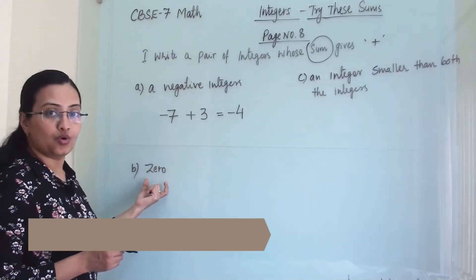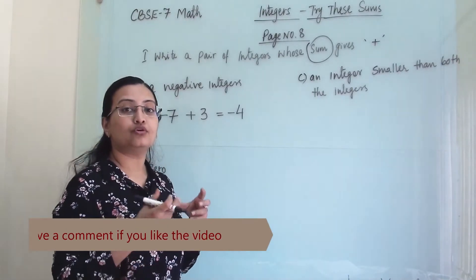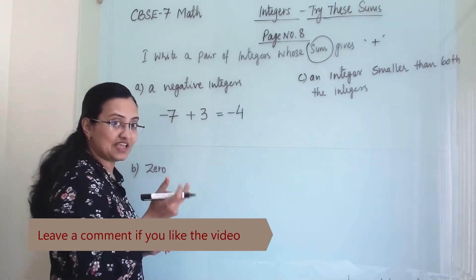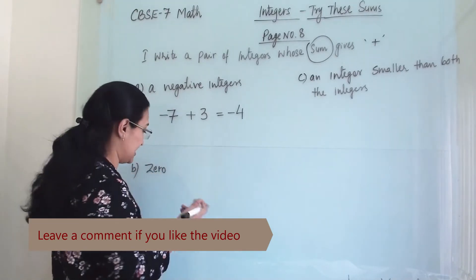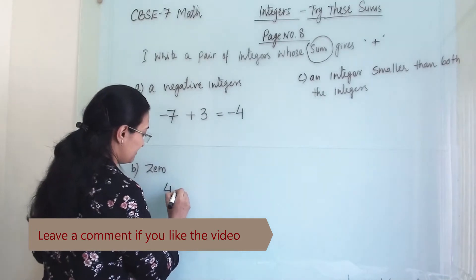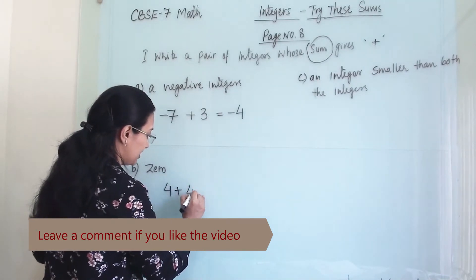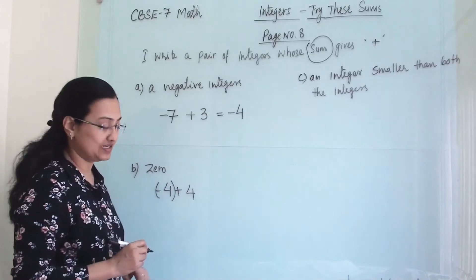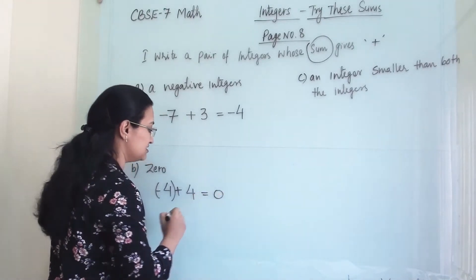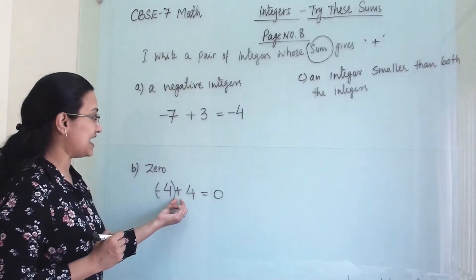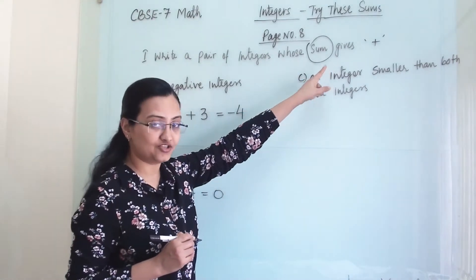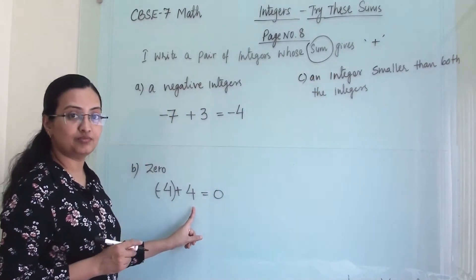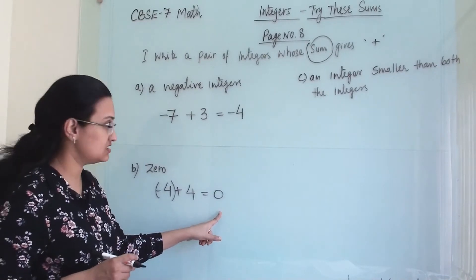Next, we need a pair of integers whose sum gives 0. We will get 0 when both integers are exactly the same but with opposite signs. For example, 4 plus minus 4. One integer is negative and the same integer is positive, so we get 0.